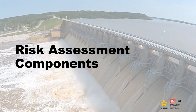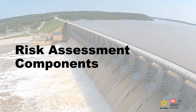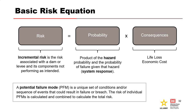The next set of slides covers the basic risk equation and components common to dam and levee risk assessments. Risk is the product of an event's probability and its consequences. Incremental risk is used to prioritize the Corps' dam and levee inventory and equals the product of the total probability of failure and the associated consequences. The probability of failure equals the product of the hazard probability — hydrologic or seismic — and the conditional probability of failure, known as the system response. System response probabilities are estimated for each credible potential failure mode, and the risk of each individual mode is combined to calculate the total risk of the project.